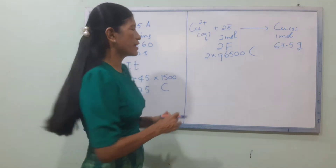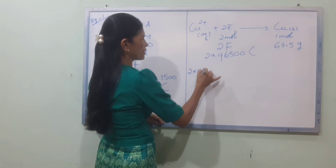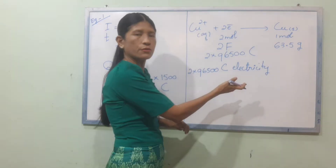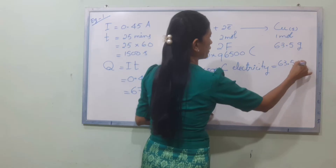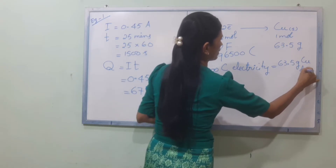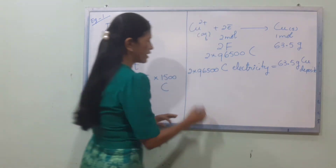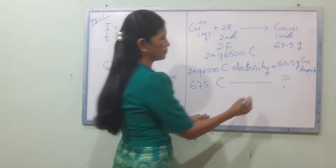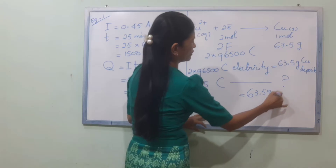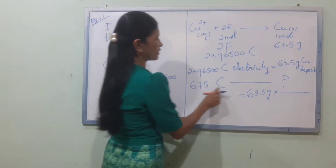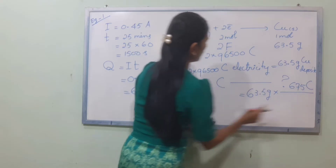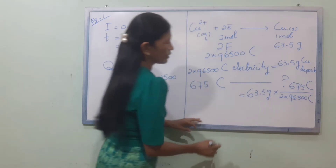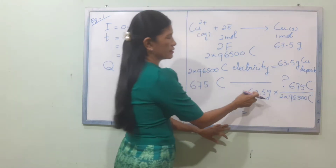Setting up the proportion: 2 times 96500 Coulombs deposits 63.5 grams. With Q equal to 675 Coulombs, the mass deposited calculates to approximately 3.5 grams of copper.